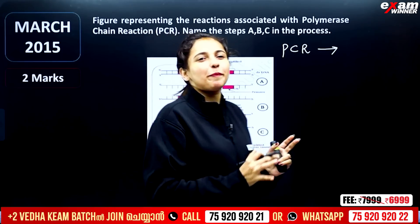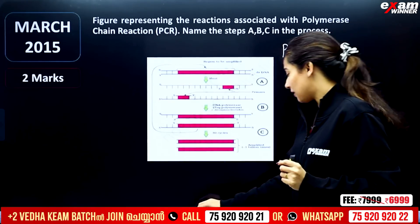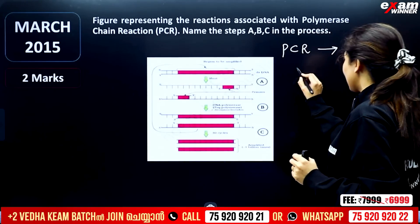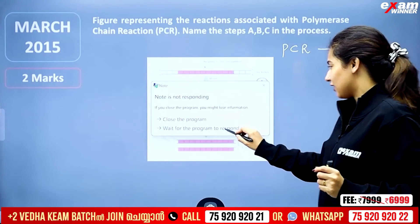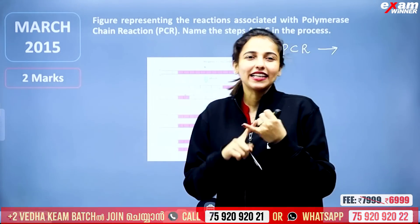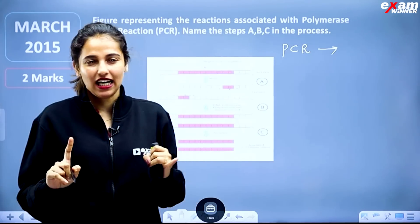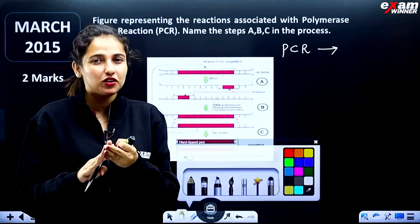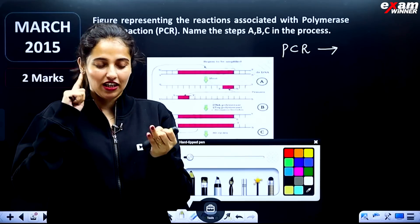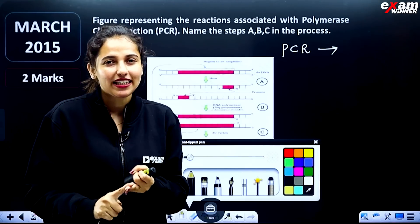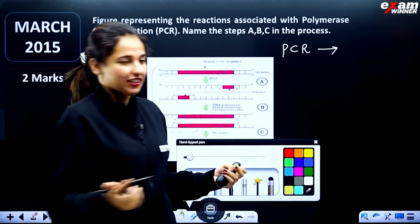If this comes in the exam, there are three steps in PCR. One is denaturation, two is annealing, and three is extension.